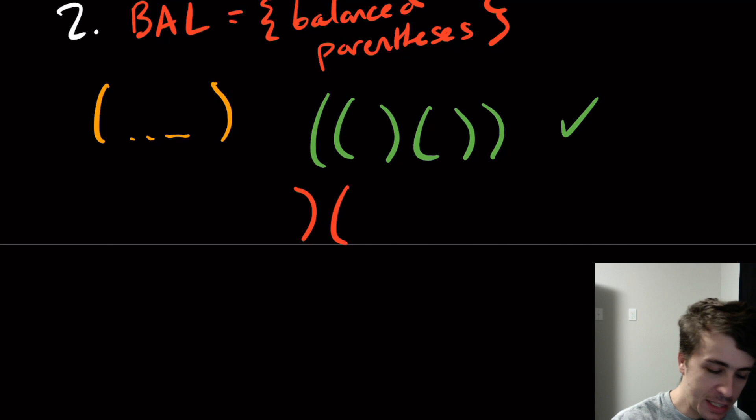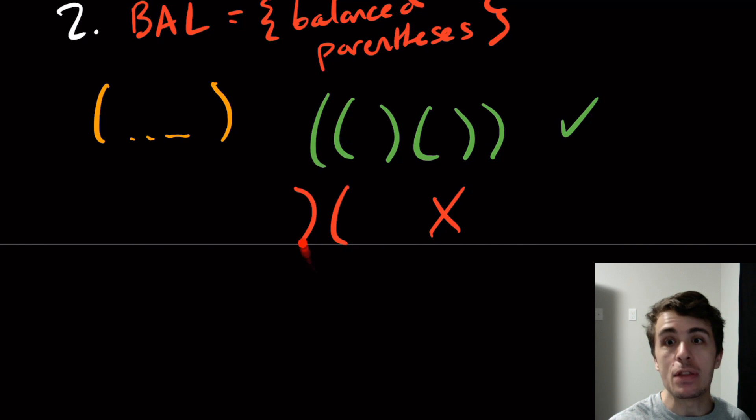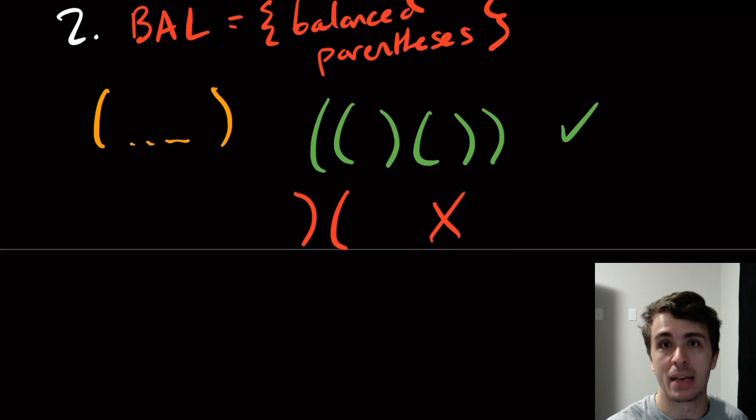But if we have something that looks like this, this is not okay. The left one didn't go before the right one, even though they match quote unquote. We wouldn't call this balanced. The left one has to go before the right one and we can have a recursive structure like this. Hint: that's what's useful to make the grammar.